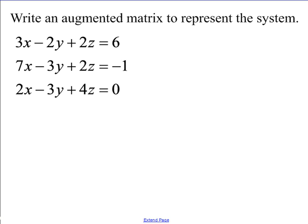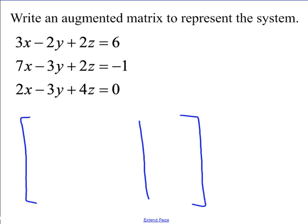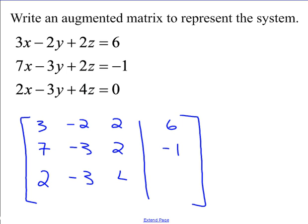Now why don't you stop the video right here and see if you can write the augmented matrix for this system. Hopefully you're back. This is a little more complicated — it's a system of three equations and three unknowns. We take our coefficients: the first row is 3, negative 2, 2, and our solution is 6. Then we have 7, negative 3, 2, and the solution is negative 1. Finally, we have 2, negative 3, 4, and the result is 0.